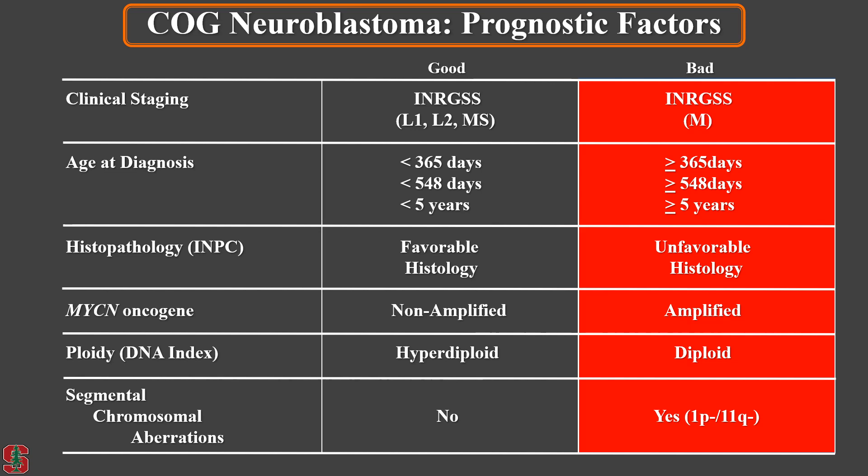Histopathology, MYCN status, and ploidy are the same factors we have historically been using. And as for the segmental chromosomal aberrations, we will use 1p deletion, 11q deletion, and are also thinking about including 17q gain.